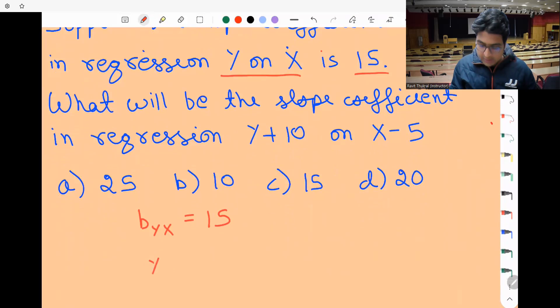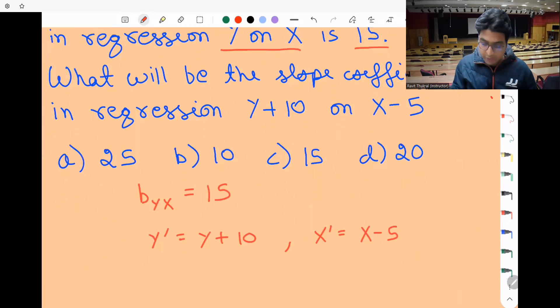Let's say Y' is Y+10 and X' is X-5. So basically you need to calculate b_Y'X' when you run the regression Y+10 on X-5.